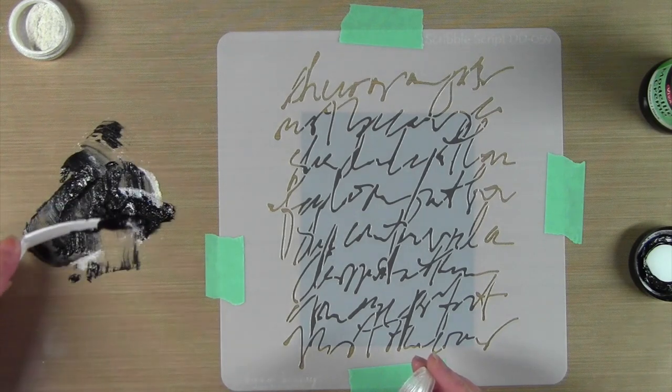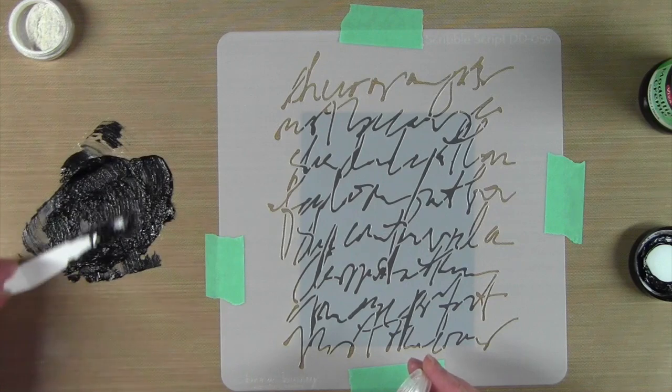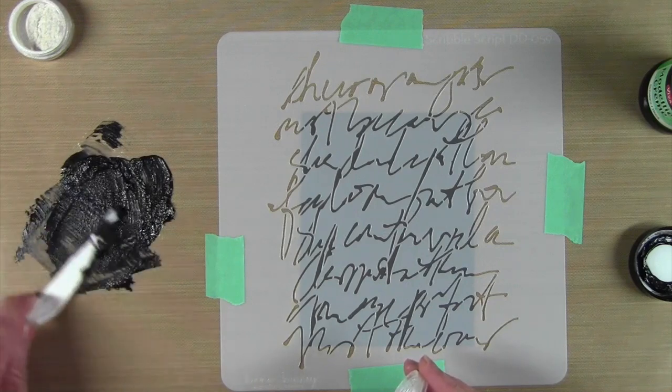So as the light hits it, sometimes it looks green, sometimes it looks purple. So you can kind of see how it's changed a little bit already.